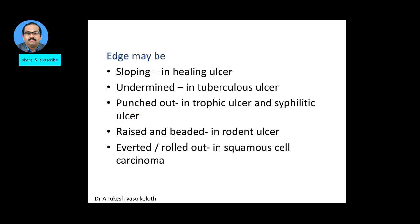Based on the edge, you can classify ulcers into common types. We have the sloping edge, which is seen in a healing ulcer. The undermined edge is classically seen in a tubercular ulcer. A punched out edge is seen in trophic ulcers, neuropathic ulcers, and syphilitic ulcers. A raised and beaded edge is seen in rodent ulcer, otherwise known as basal cell carcinoma. A raised and everted or rolled out edge is seen in squamous cell carcinoma.